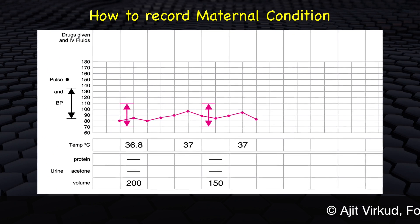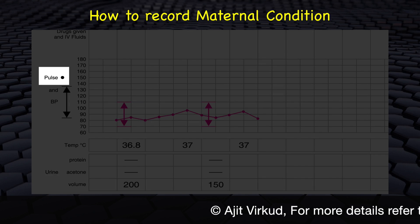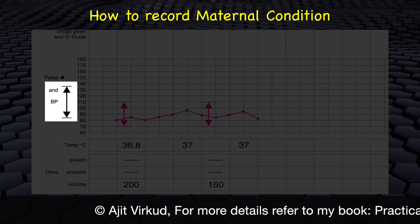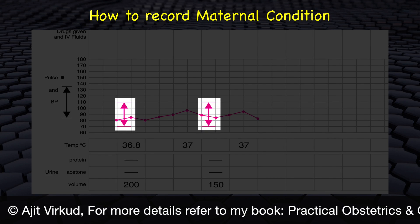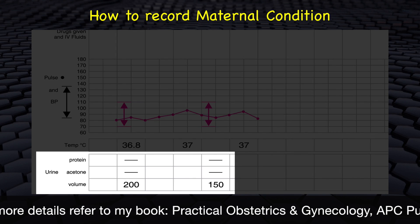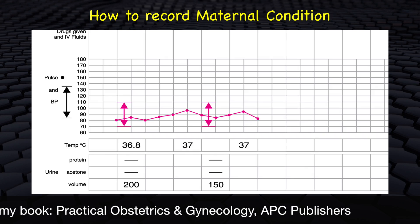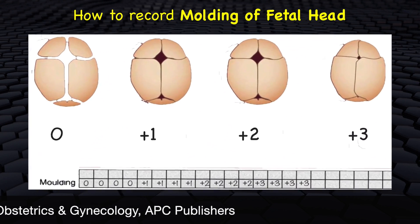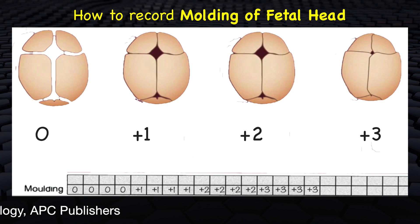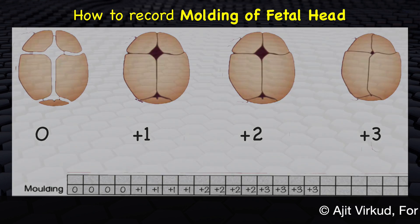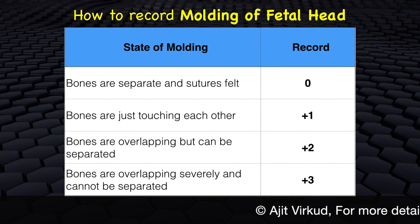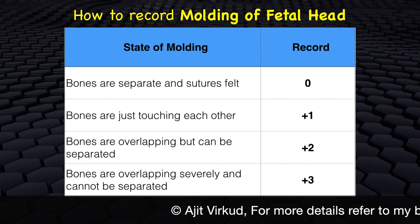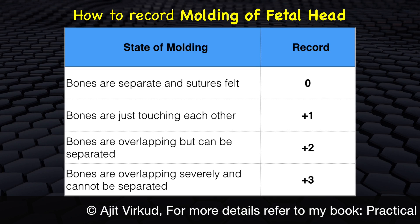To record maternal condition: record maternal pulse every 30 minutes marked as a dot, blood pressure every 4 hours marked with up and down arrows, and temperature every 2 hours. Measure urine for amount, albumin and acetone from time to time. Moulding of the fetal head is also recorded — it is the extent to which cranial bones overlap, indicating the degree to which the head is compressed as it passes through the bony pelvic cavity. Excessive moulding is an indication of obstructed labor, possibly due to cephalopelvic disproportion. Moulding is recorded on a scale of 0 to +3, with 0 indicating no moulding and +3 indicating excessive moulding.